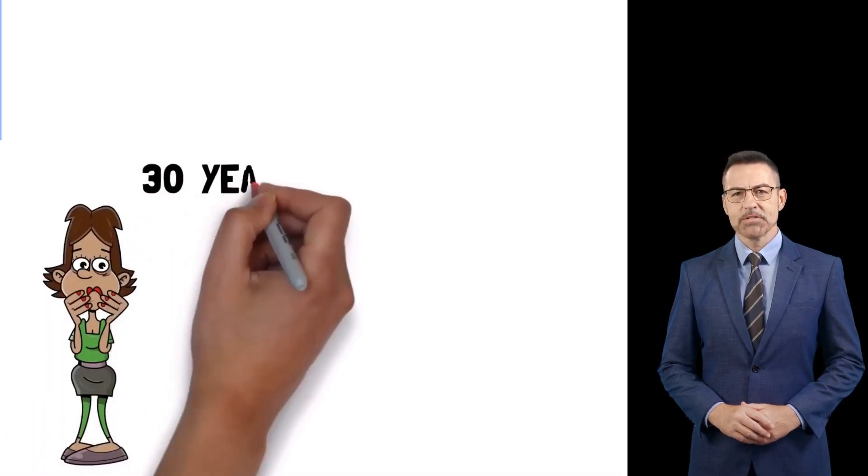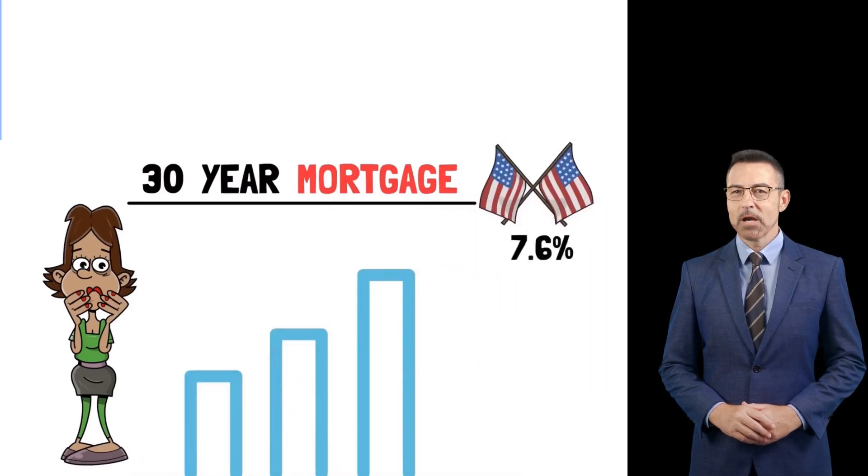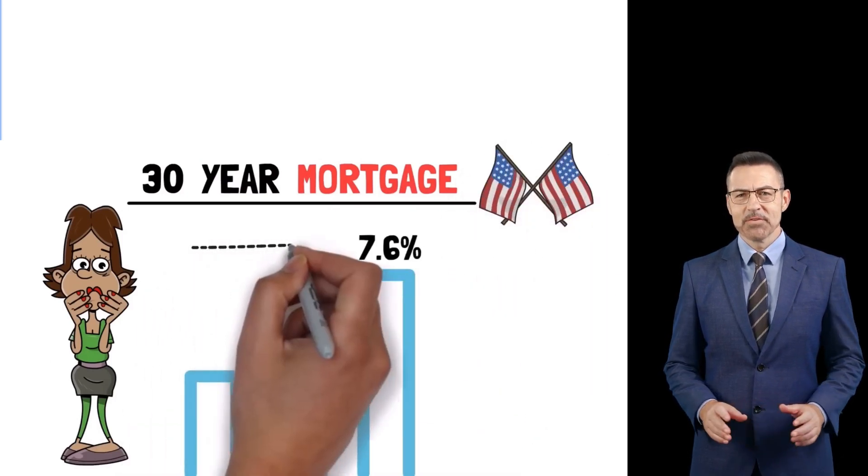We've all heard the news. The average 30-year mortgage in the United States just surpassed 7.6%. This makes it the highest level since December 1st, 2000.